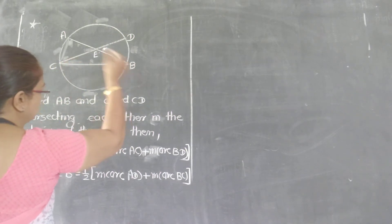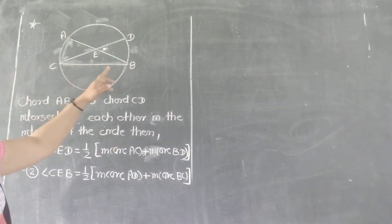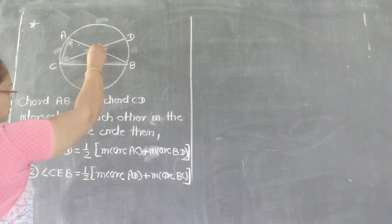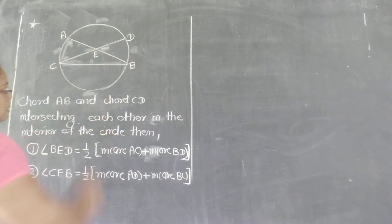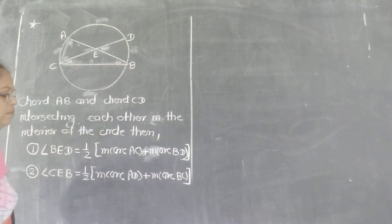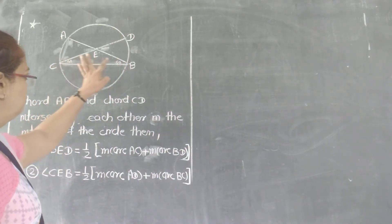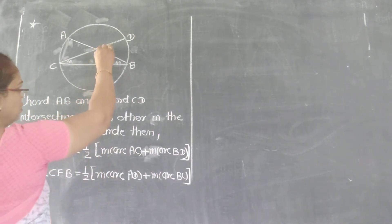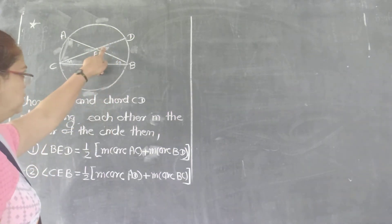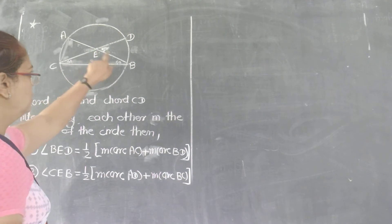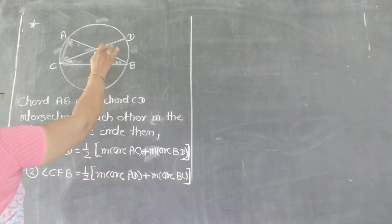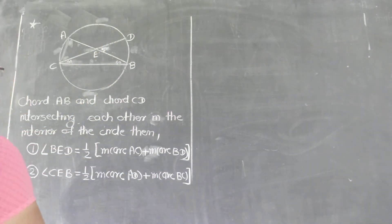Let's draw line DC here. After drawing this line, the angle formed is in triangle ECD. Now consider: the measure of this angle is 40 and this angle is 50. Then the measure of this angle is 90. This one is the exterior angle of this triangle; these are the remote interior angles. And the measure is 90.